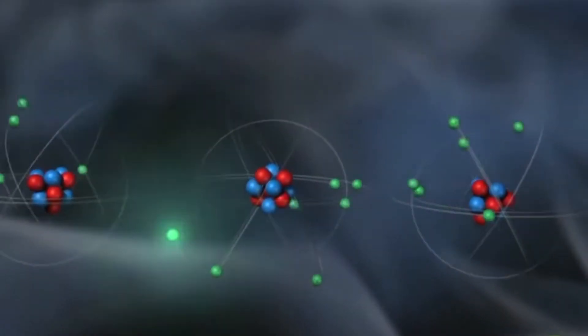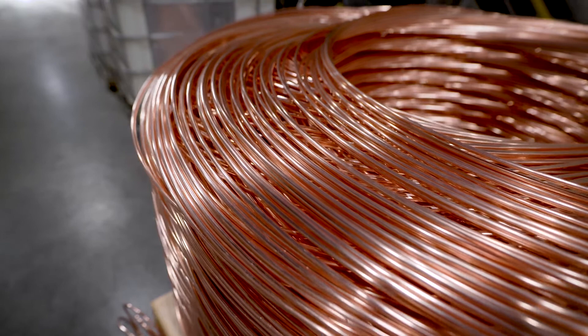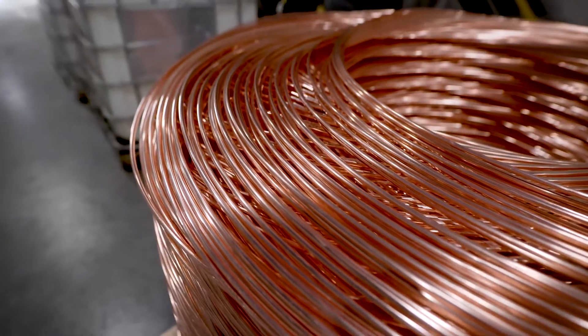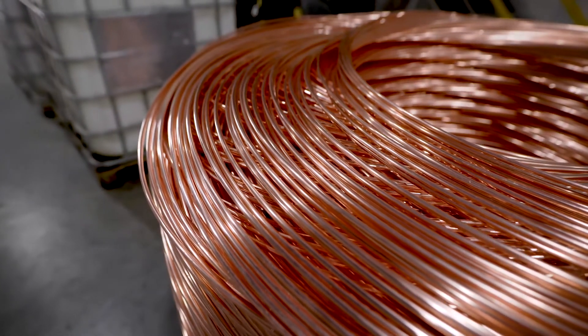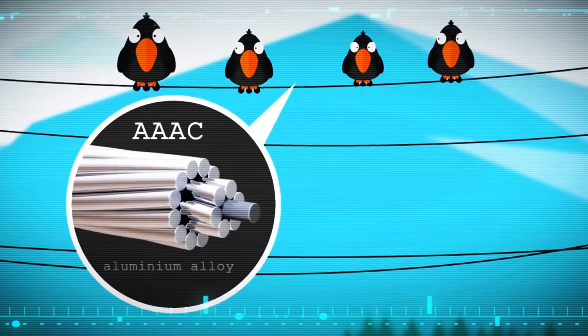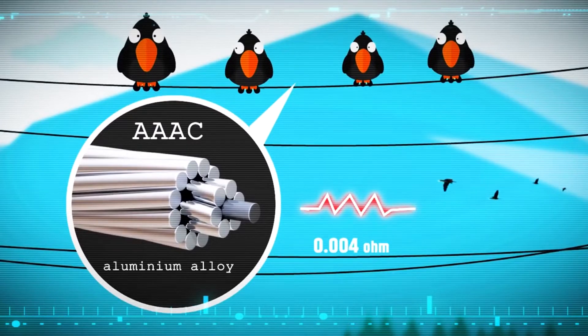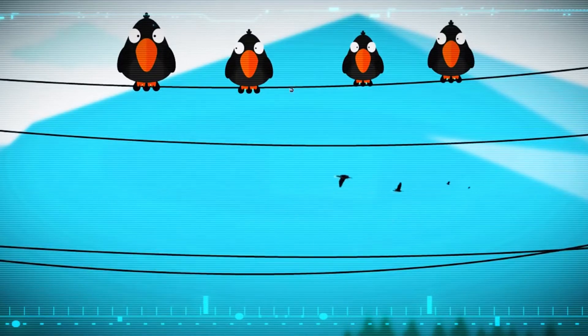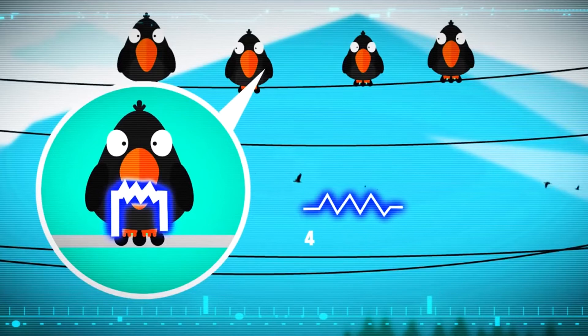Now electric current is just flow of electrons in a conductor. And these electrons, similar to water, flow where there is the least amount of resistance. In electrical lines, copper is used which is an excellent conductor of electricity. The birds not getting shocked means that they are not a good conductor with respect to the wire. The current for the most part ignores the bird and continues to travel through the wire.